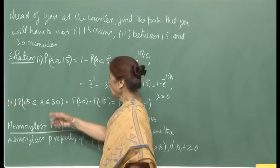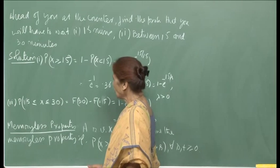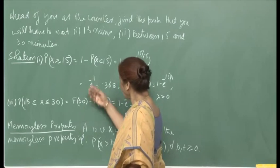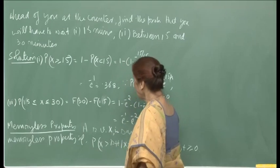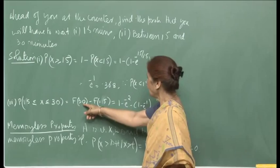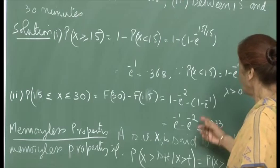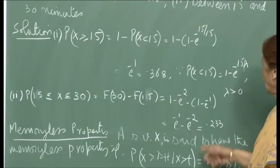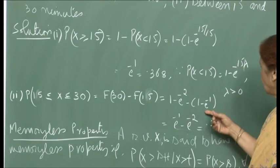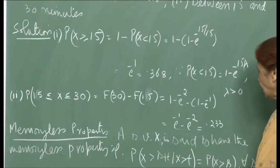For the probability that waiting time is between 15 and 30 minutes: probability 15 ≤ x ≤ 30 equals F(30) minus F(15), which gives (1 minus e raised to minus 2) minus (1 minus e raised to minus 1), so it equals e raised to minus 1 minus e raised to minus 2, which is 0.233.